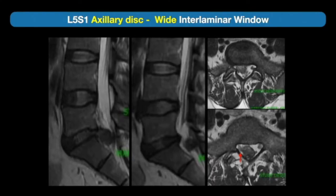First case example: wide interlaminar window with a large extruded disc herniation at L5-S1 level on the right side. It is an axillary disc where the nerve root is not covered under the facet joint. So we can just make a small slit in the ligamentum flavum without any bone resection and remove the herniation effectively.